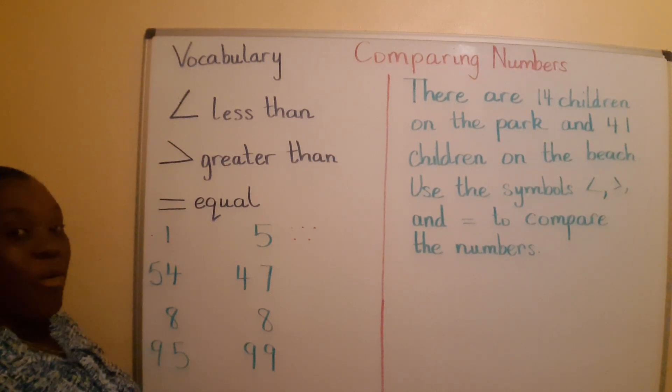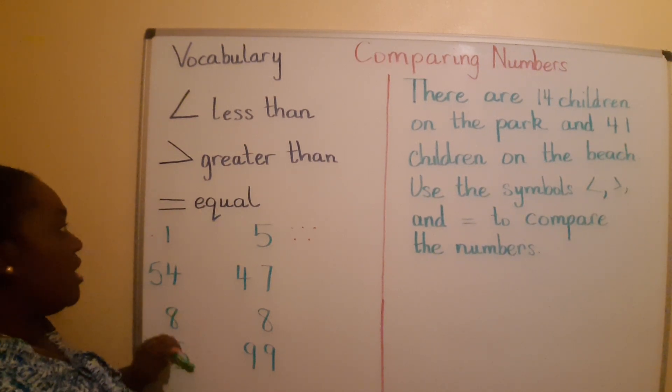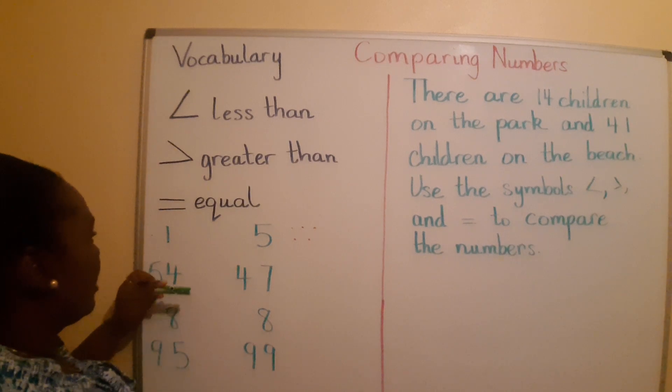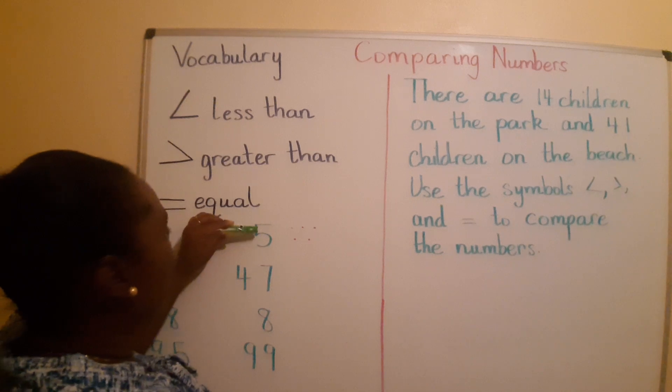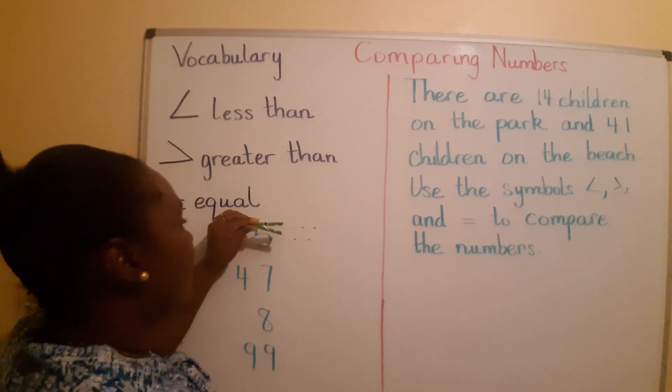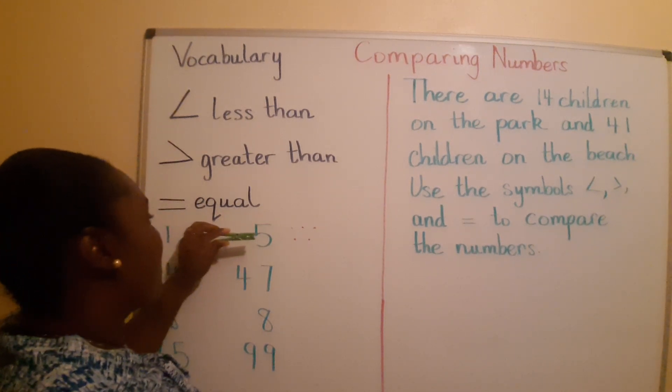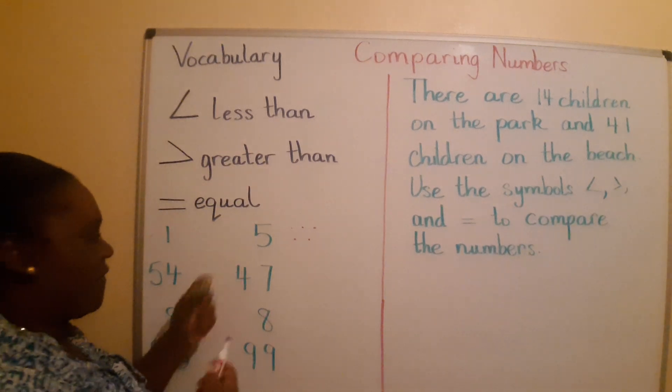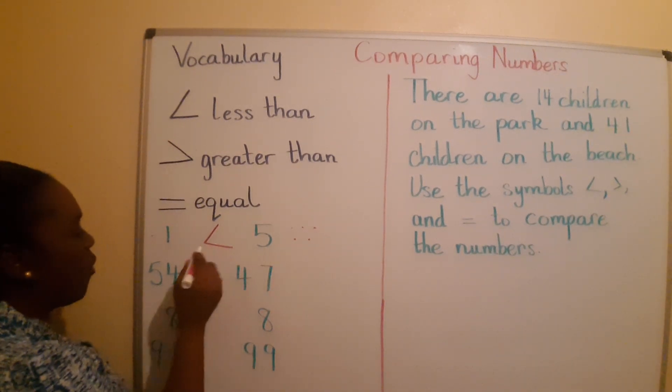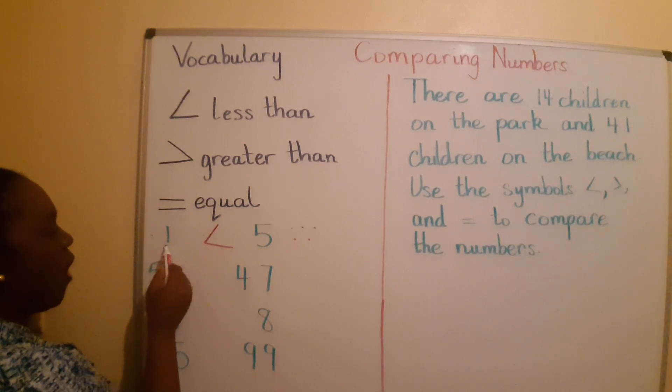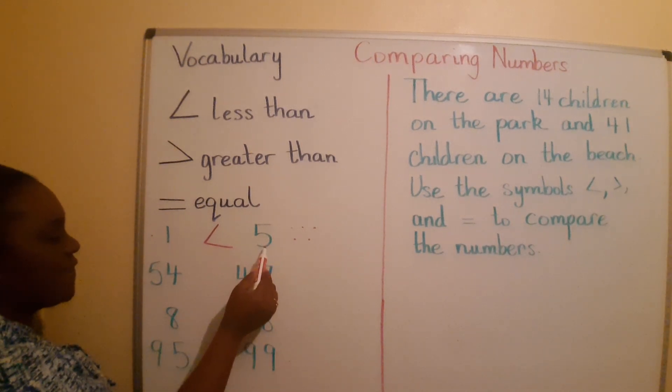Let's see what our friend Al the alligator says. He's looking. He's looking. And there it goes. He's going to chomp up the 5. 5 is greater than 1. Or we can say 1 is less than 5.